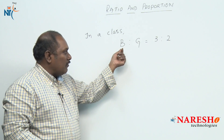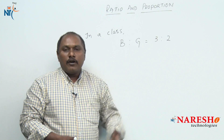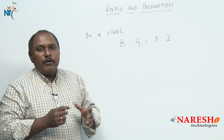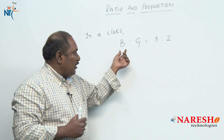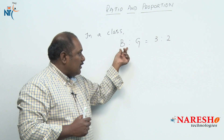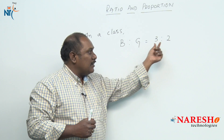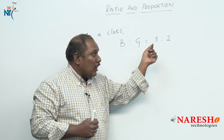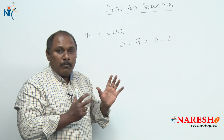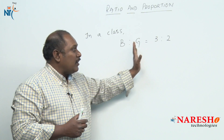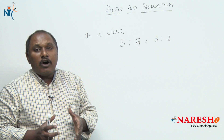In a class, the number of boys and girls are in the ratio of 3 is to 2. What do you mean by this? The simple meaning is: if the number of boys in the class are 3, then the number of girls in the class should be 2. Now, are these the actual number of boys and girls? They may be or they may not.